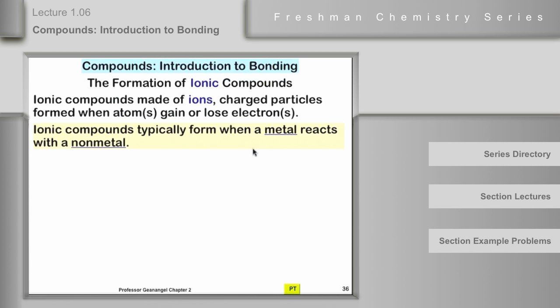If I put up a formula and I ask you is it an ionic compound or not, you should look to see whether it's made up of a metal and a nonmetal. If it is, chances are good it's an ionic compound. So that's the first thing to pick up off this slide and remember.